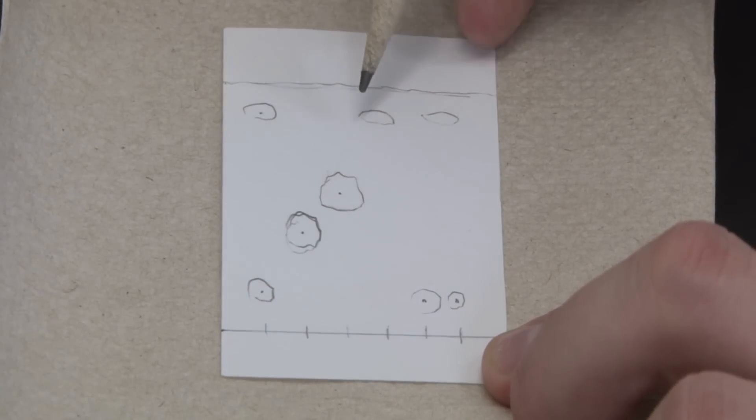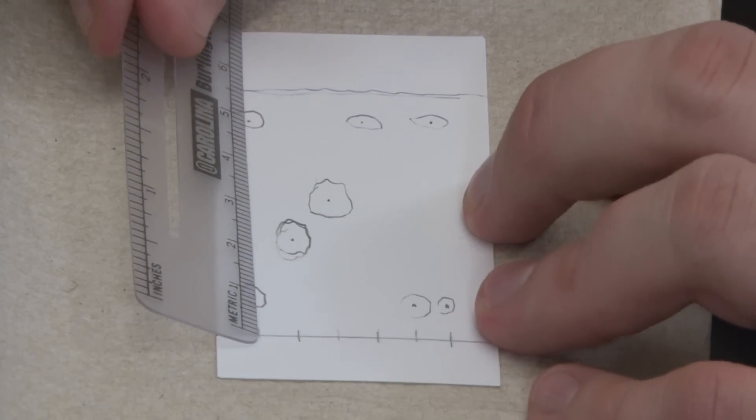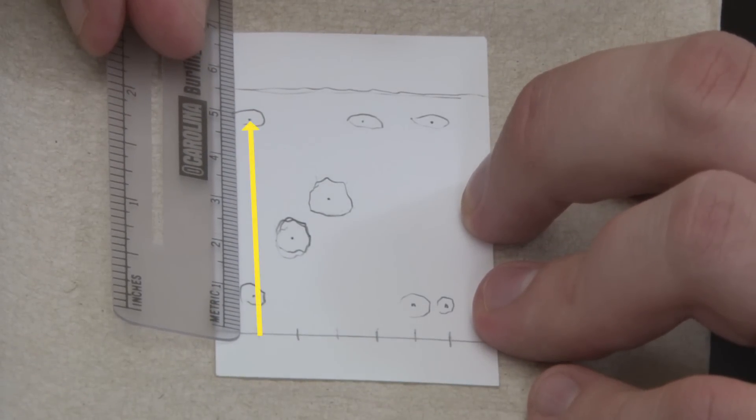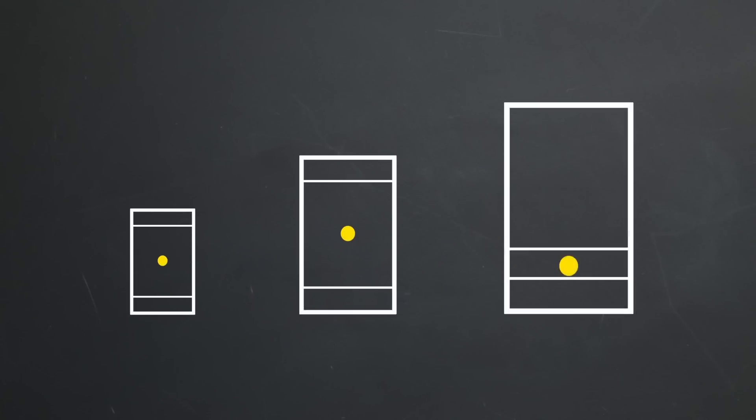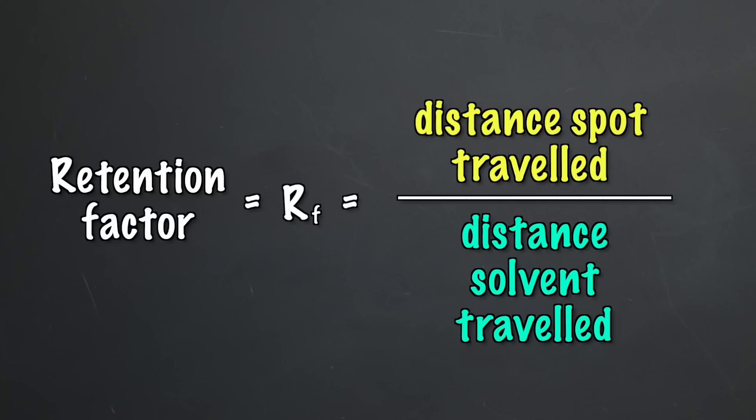To record this data, you'll need to measure the distance from the starting line to the center of each spot. If your unknown has multiple spots, you need to measure to the center of each spot. The distance the spots travel will depend on the size of your TLC sheet, but a substance that moves halfway up a sheet should move halfway up any size sheet. That's why we need to calculate the retention factor, or RF, of each spot. The RF is calculated by dividing the distance the spot traveled by the distance the solvent traveled.